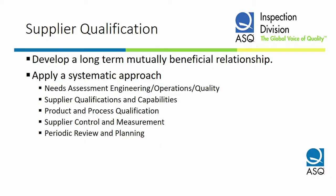Supplier qualifications develop a long-term mutually beneficial relationship. You don't want a strategic supplier who you monopolize — a strategic supplier that you're buying 80% of their sales might as well be a captive supplier, and that's a different solution. You want to apply a systematic approach to qualifying suppliers: a needs assessment — how do you define when you need a strategic supplier and when you don't. The supplier qualification process and the supplier's capabilities, product and process qualifications, supplier control and measurement, and periodic review and planning all make up a systematic approach for qualifying suppliers to be strategic.